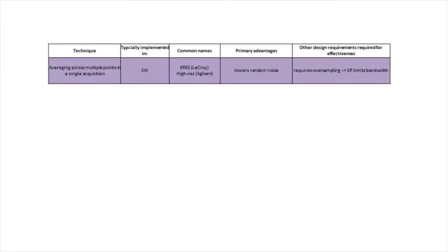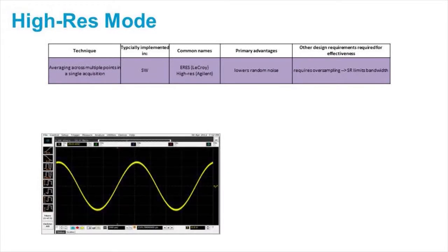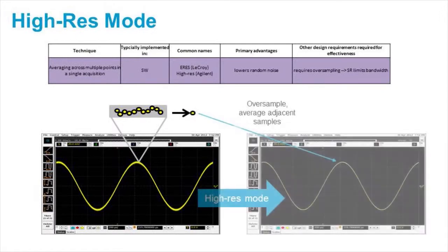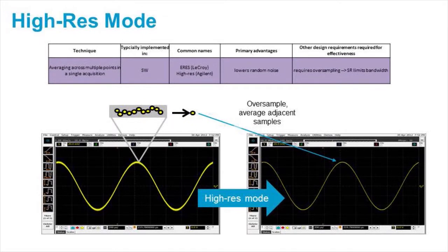A third technique is called high res mode, and this one is less well known amongst engineers. In high res mode, oscilloscopes that have more sample rate than is needed for the bandwidth can perform over sampling, and then it will average all of those samples within a single acquisition and create a single Y value point, thereby eliminating internal noise that's deterministic from the oscilloscope.